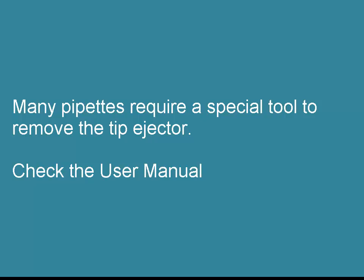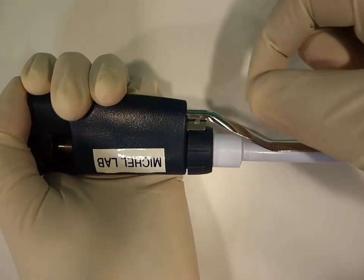Remove the tip ejector. Here are three different types. In this one, you push down the flange and pull off the tip ejector.